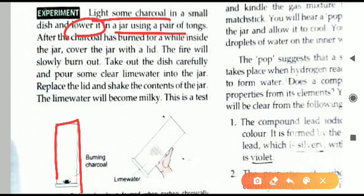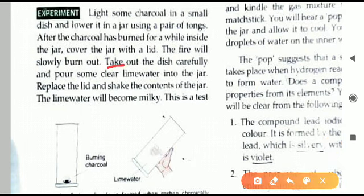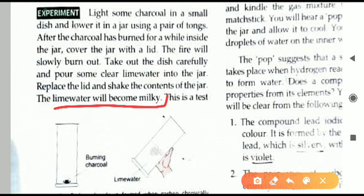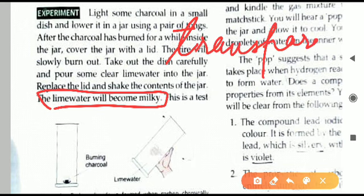After we have covered the burning charcoal with the jar, its fire will slowly stop — after some time the fire will burn out. After that, we carefully take the dish out. Then we put lime water into the jar.